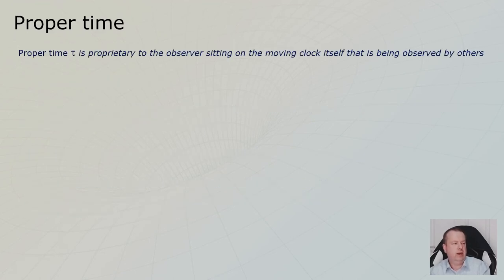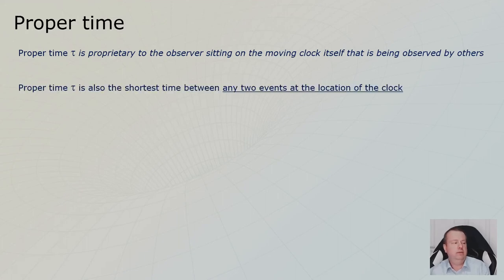Another way of defining it, they usually use the Greek t, which is tau. It's proprietary to the observer sitting on the moving clock. Well, the clock is not moving. It's his clock, his stationary clock, which is moving for all the other observers. And that's where he measures the events.